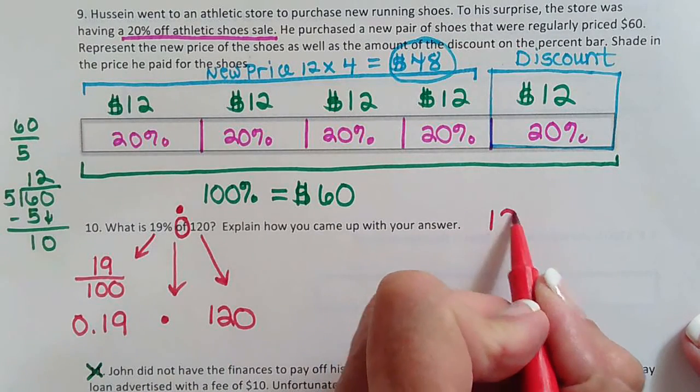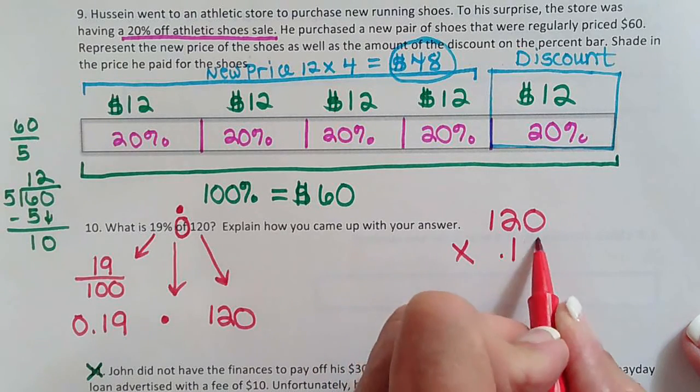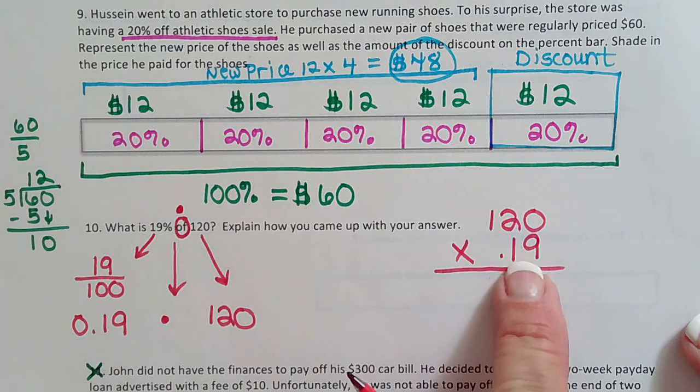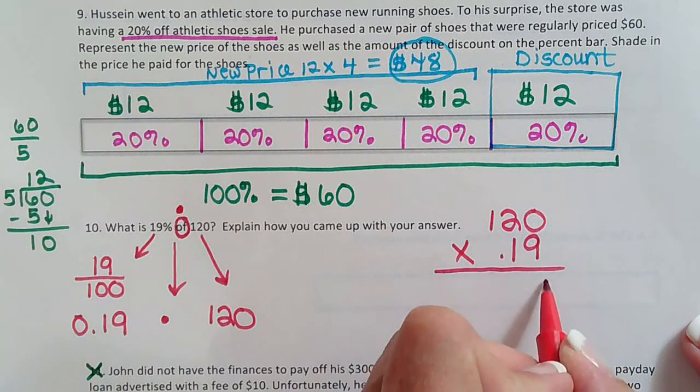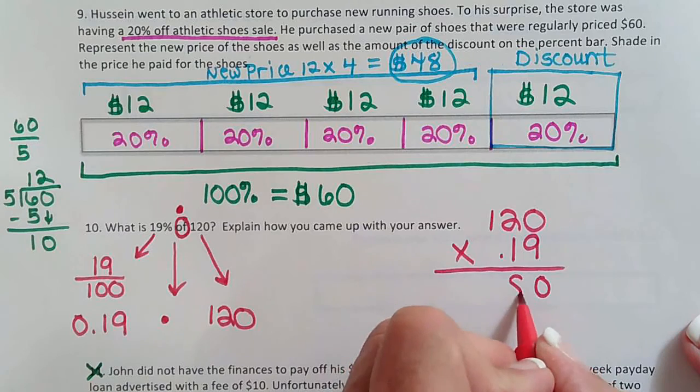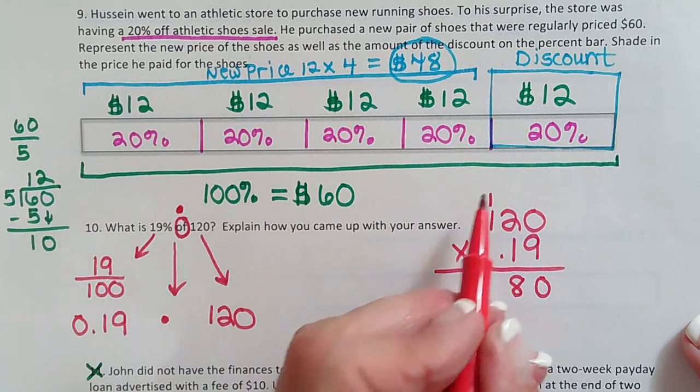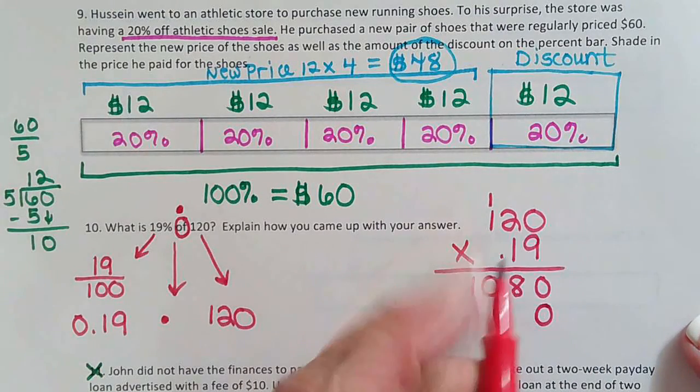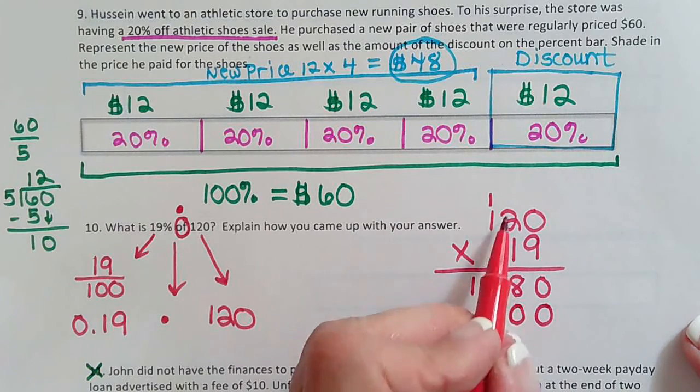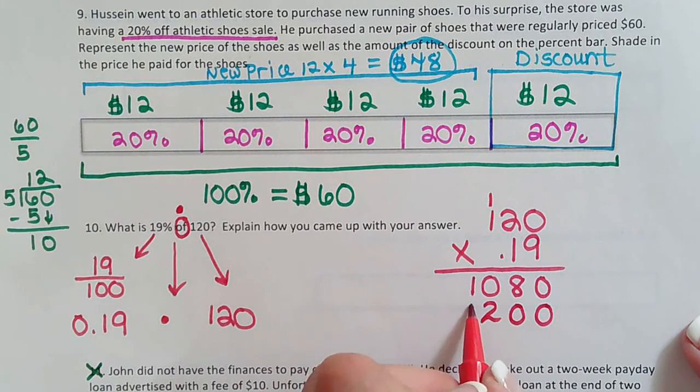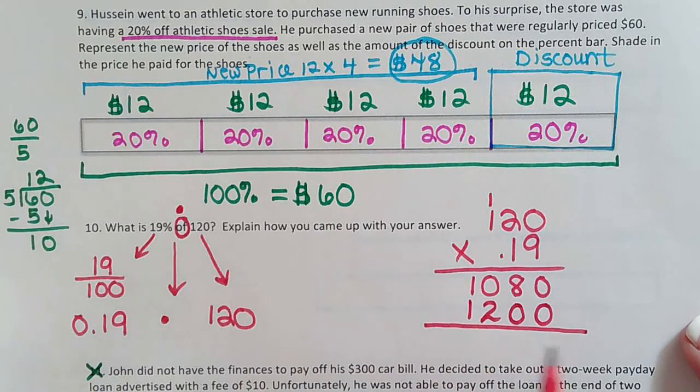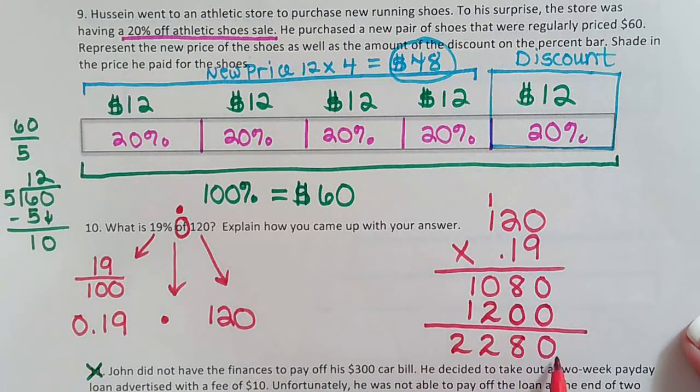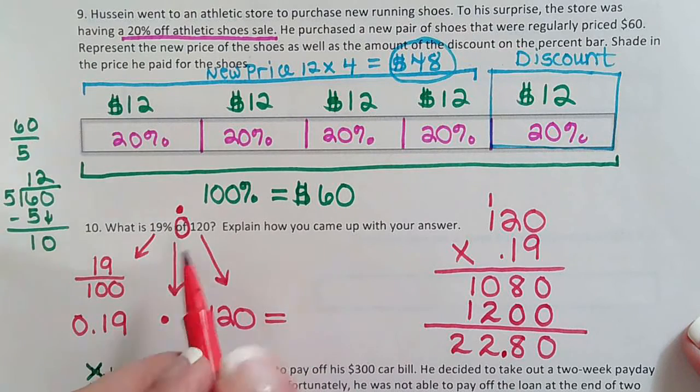So let's go over here to the side and do 120 times 0.19 and remember what we learned about decimals. This means there's going to be two decimals in the answer. So 0, 9 times 2 is 18, carry our 1, 9 times 1 is 9 plus 1 is 10, then we bring our 0 down for our second row and then we do 1 times 0 which gives us another 0, then 1 times 2 which is 2 and 1 times 1 which is 1.